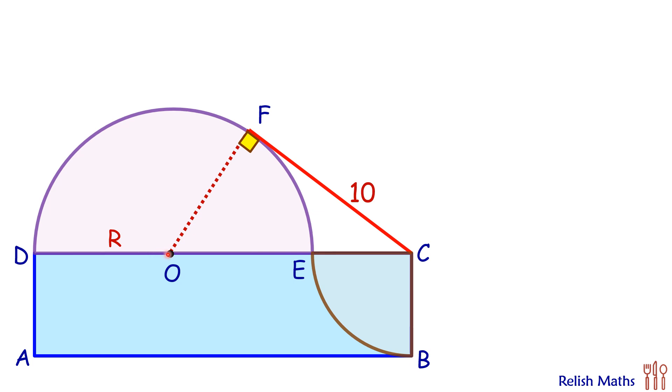Now here let's assume this semicircle, the radius is capital R. Thus OF is capital R and OE is also R. For the quadrant, let's assume the radius is X, and thus BC is also X.